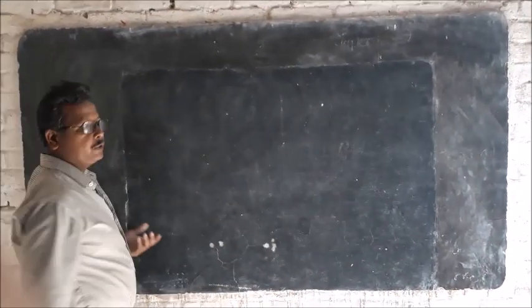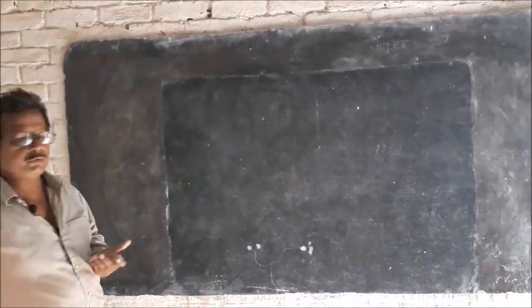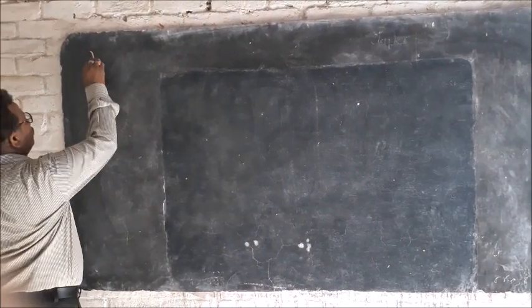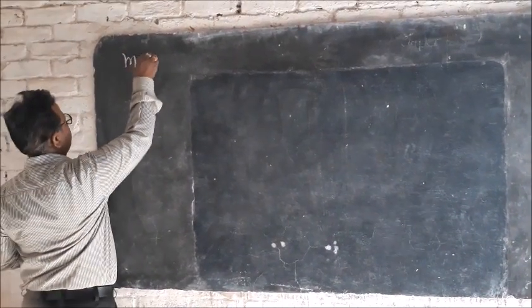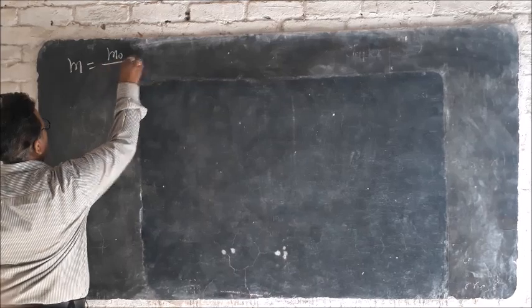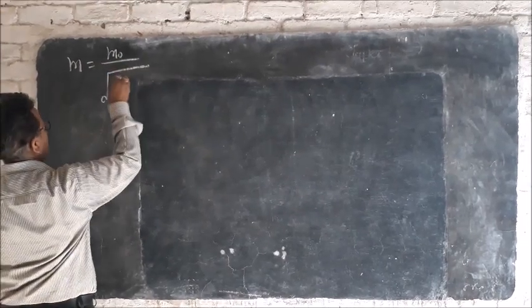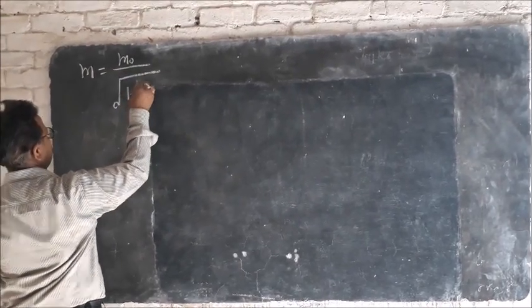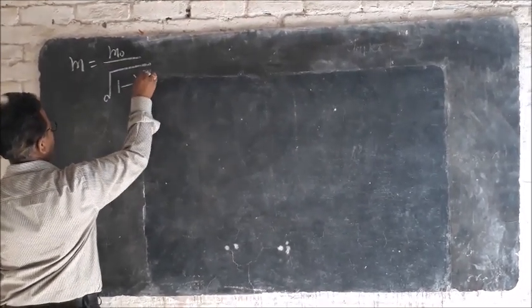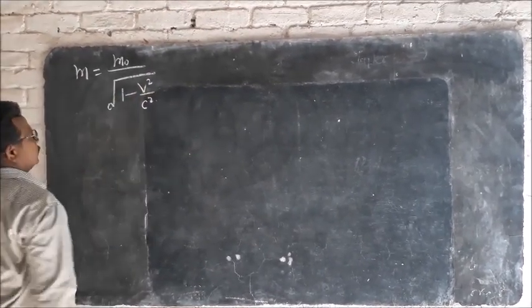According to the theory of relativity, the equation is: moving mass of object equals rest mass of object upon the square root of 1 minus the velocity square of the object upon velocity square of light.